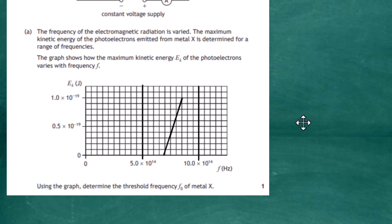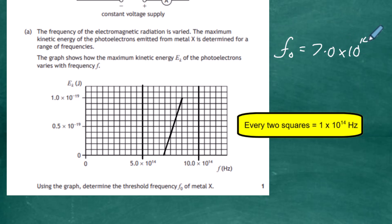Our next problem is to work out the scale of the graph. Every two squares on the graph horizontally stands for 1 × 10¹⁴ Hz. So from here you've got five, and every two squares is an extra one: six, seven, eight, nine, and ten. When it strikes this point, the graph hits at 7 × 10¹⁴ Hz. So the threshold frequency is equal to 7.0 × 10¹⁴ Hz.